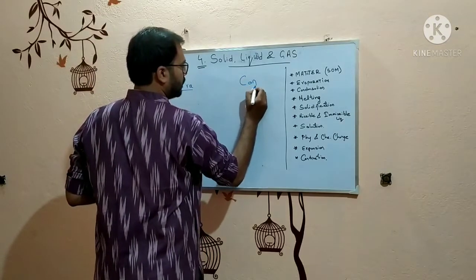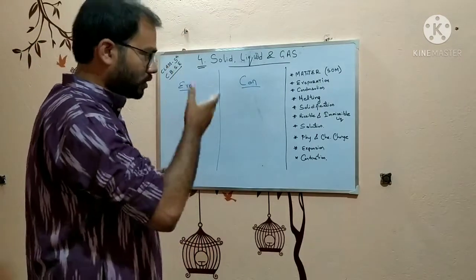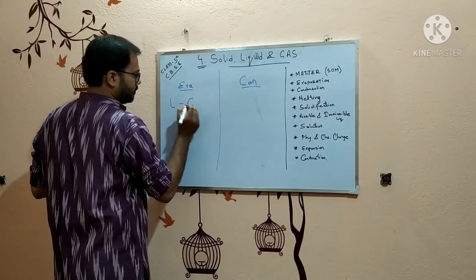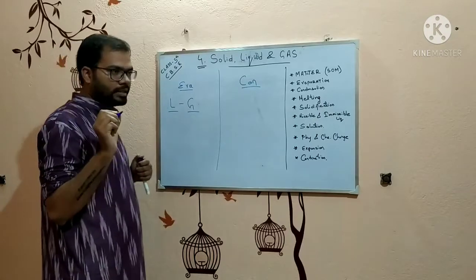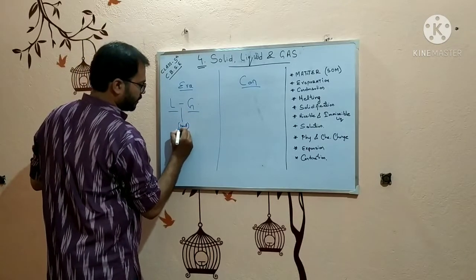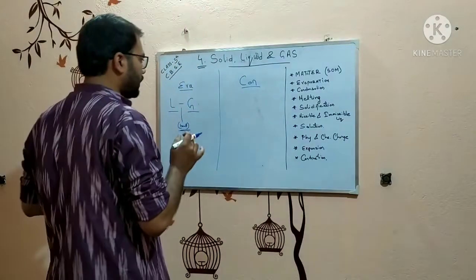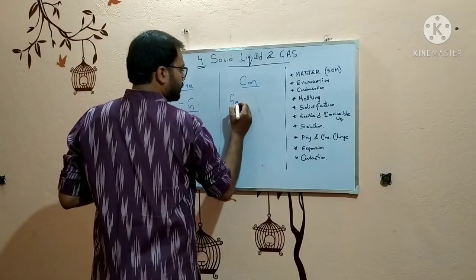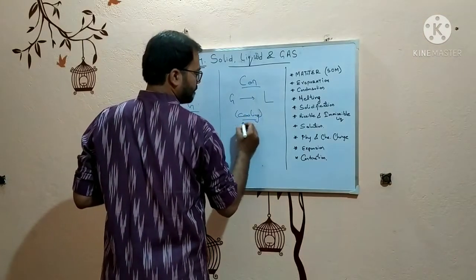Evaporation and condensation — so what happens actually? Evaporation is nothing but the conversion of liquid into gaseous form. Any liquid when changed to gas is known as evaporation. But one important thing is — by heating. When we apply heat and the liquid changes to gas, that process is known as evaporation. In case of condensation, it is completely opposite to evaporation — when gas is being converted to liquid by cooling, it is known as condensation.